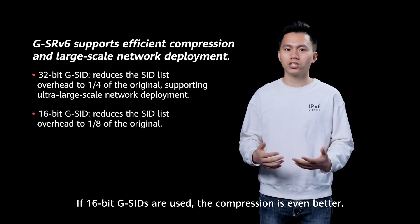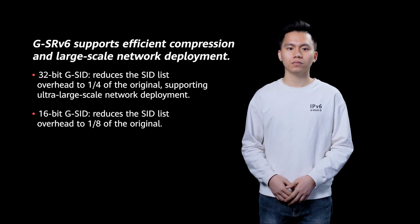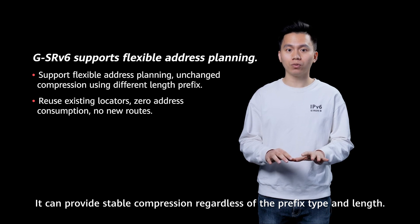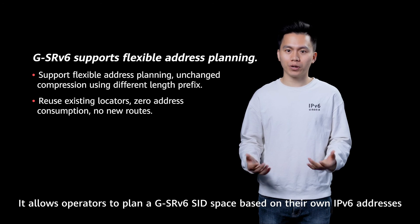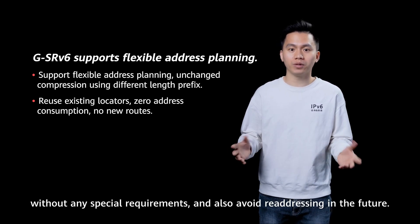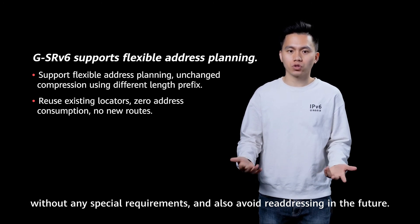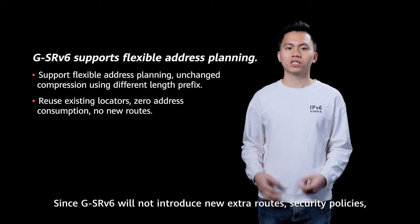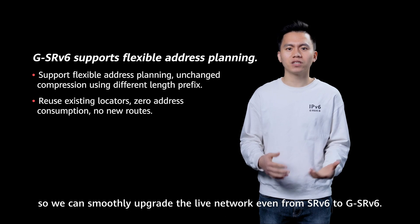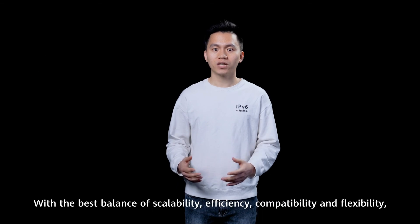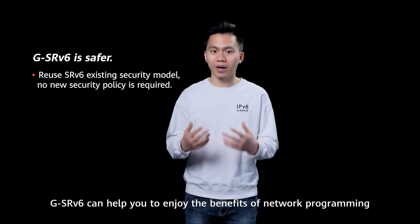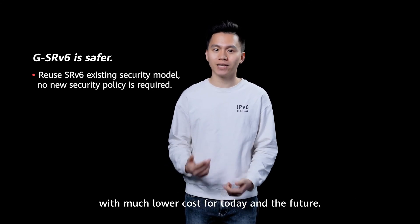If using 16-bit GSRV6, the compression can be even better. Third, GSRV6 supports flexible address planning, consuming fewer addresses. It can provide stable compression regardless of prefix type and length, and allows operators to plan the GSRV6 SID space based on their own IPv6 address without any special requirements. We can also avoid re-addressing in the future. Since GSRV6 introduces no new extra routes, security policies, or new addresses compared to SRV6, it can smoothly upgrade a live network from SRV6 to GSRV6. With the best balance of scalability, efficiency, compatibility and flexibility, GSRV6 can help you enjoy the benefits of network programming with much lower cost, today and in the future.